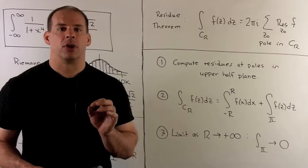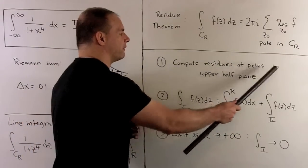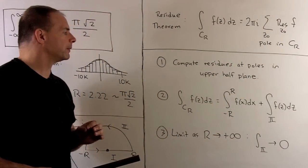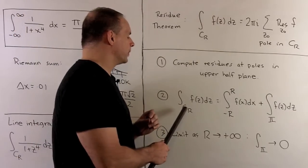So, what's our setup? Our first step, I'm going to want to compute the residues of the poles of our function in the upper half plane. Then, we're going to break our integral into two pieces.